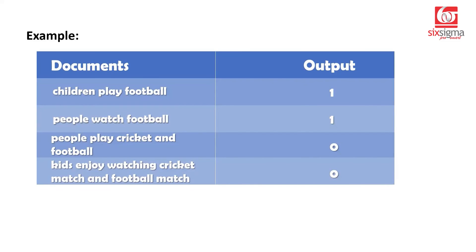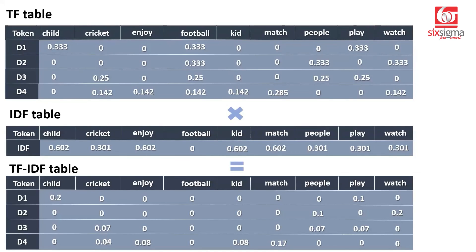Not all input texts had the same number of words — some had three, some four, some seven. This is the main challenge with unstructured data: there's no fixed size. The TF-IDF table brings it to a structured format with fixed rows and columns, where each column represents a term and each row represents a document. This can be mapped to a target column for prediction. You'll also notice many zeros — because not all documents use all words, the output is sparse. That's TF-IDF. Next, we'll move to the hands-on piece.